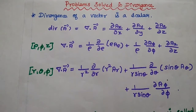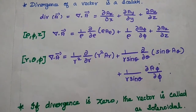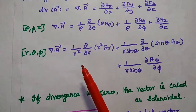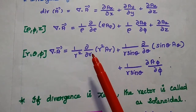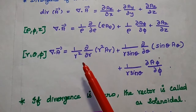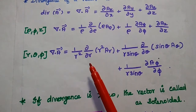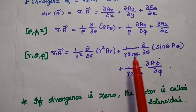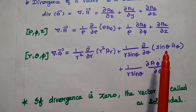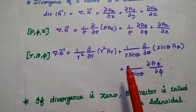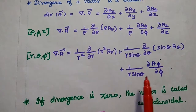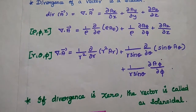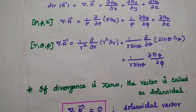The third one is the spherical coordinate system. The coordinates are r, θ, φ. The divergence of a vector is equal to (1/r²) ∂/∂r(r² Ar) + (1/r sinθ) ∂/∂θ(sinθ Aθ) + (1/r sinθ) ∂Aφ/∂φ. These three formulas are very important for divergence.